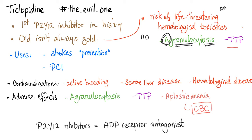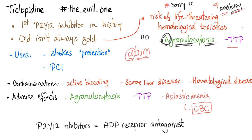Agranulocytosis means a condition with no granulocytes. The granulocytes are BEN: basophils, eosinophils, neutrophils. When taking ticlopidine, you risk decreasing these white blood cells in your body, making you more liable to infections. Other toxicities include TTP and aplastic anemia — more correctly called aplastic pancytopenia, because you have decreased red blood cells, decreased white blood cells, and decreased platelets.